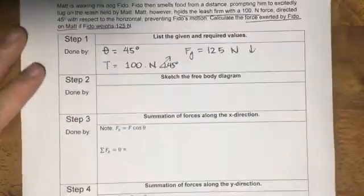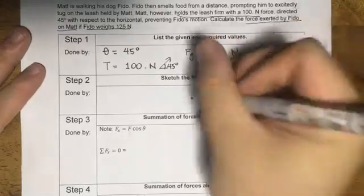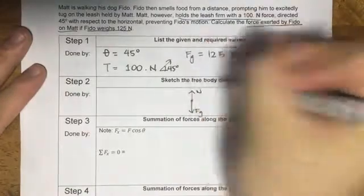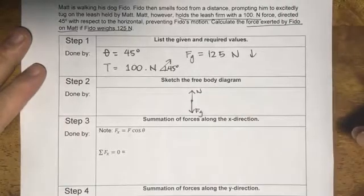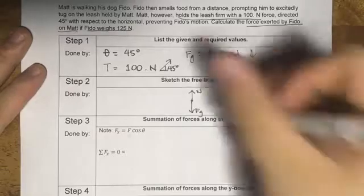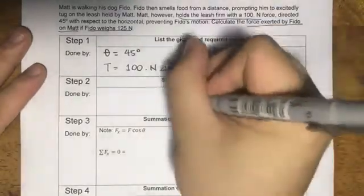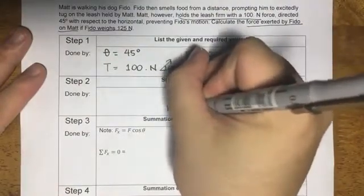So if we were to sketch the free body diagram, let's start with what we know. Gravity always goes down, normal force always goes up. And then when your dog is running, he has to exert an applied force in the direction at which he is running. F applied, or I'll just call it F of Fido.